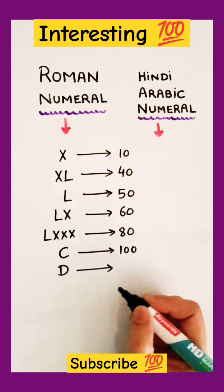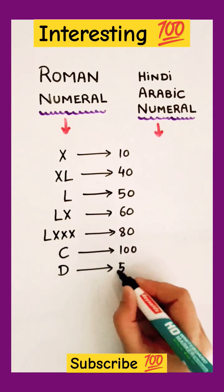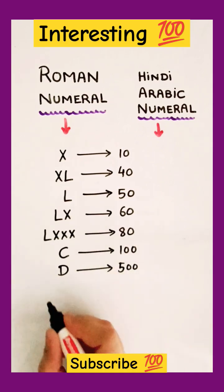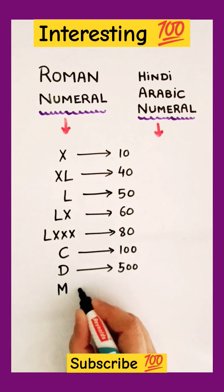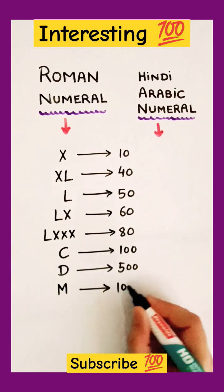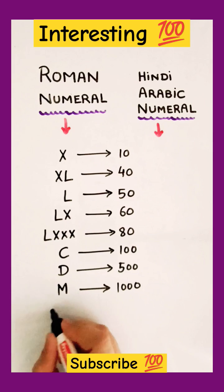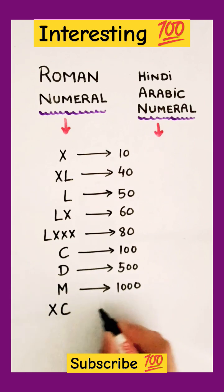And capital letter D, it corresponds to 500. Right? M stands for 1000. What is this? X, C.